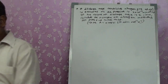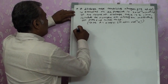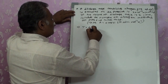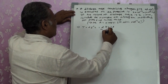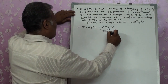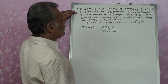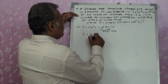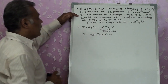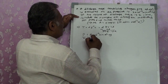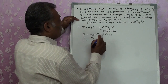Next problem: A discharging tube contains nitrogen gas at 25°C, so T = 273.15 + 25 = 298.15 K. It is evacuated till the pressure is 2 × 10⁻² mmHg. Volume of the discharging tube is 2 liters. Calculate the number of molecules of N₂ gas.